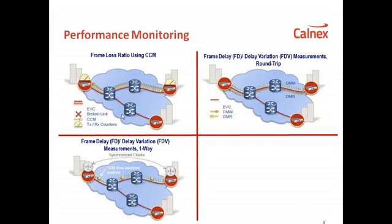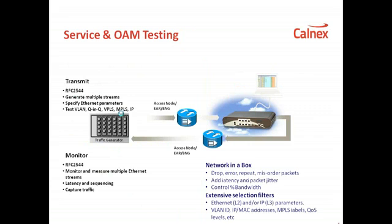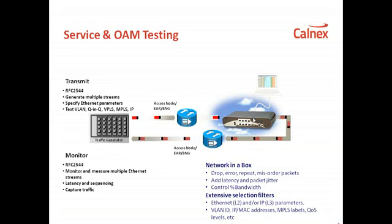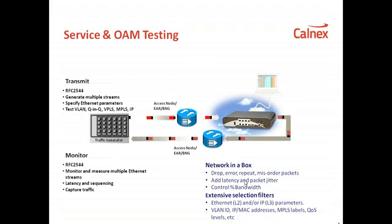OAM performance needs to be tested in the lab before deploying in a network. The first step is to use a product that will ultimately emulate the network. For example, if you're testing that delay measurement messages are reporting correctly, you could use an emulator to emulate the network delay. You could also use the Calnex Paragon X product to emulate delays on particular OAM messages.